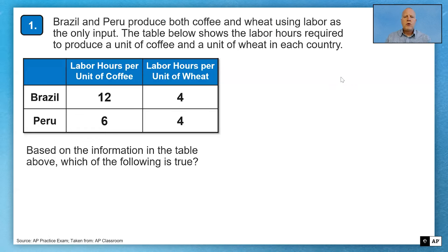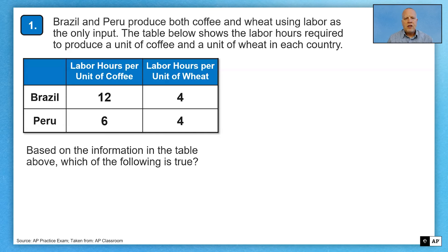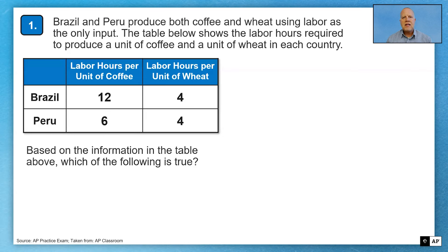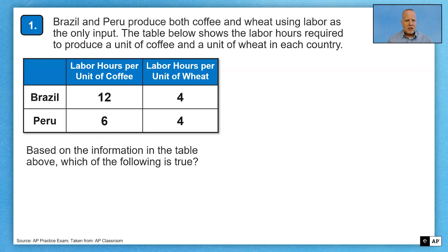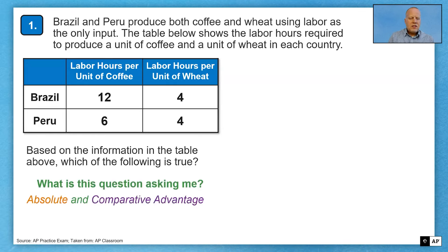Question number one: Brazil and Peru produce both coffee and wheat using labor as the only input. The table shows the labor hours required to produce a unit of coffee and a unit of wheat in each country. Before we move forward, we have to define what the problem is asking us. A problem well-defined is half solved. This is going to be either an absolute or comparative advantage question — I can already tell that from the table they gave us.